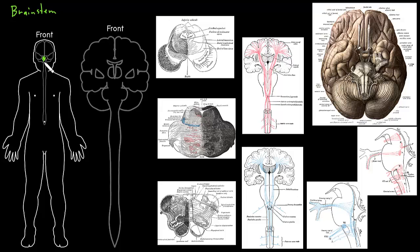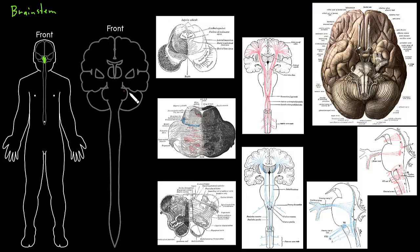The brain stem is right around here. If we look at our larger drawing of the central nervous system, this is the brain stem right here. The brain stem connects basically all the parts of the nervous system together — the cerebrum on top, the spinal cord below, and the cerebellum, which is behind the brain stem. The brain stem also connects most of the cranial nerves.